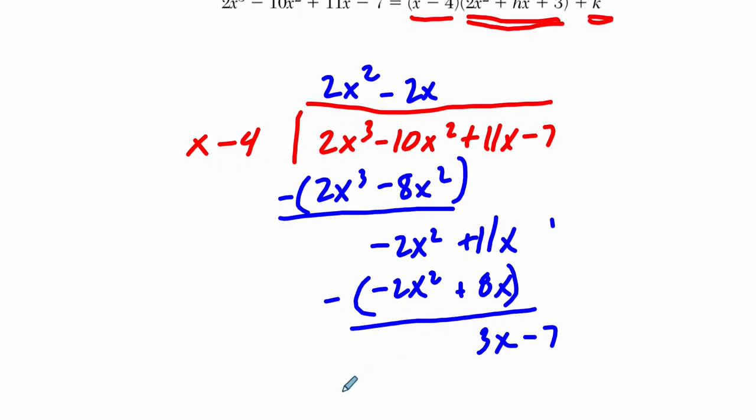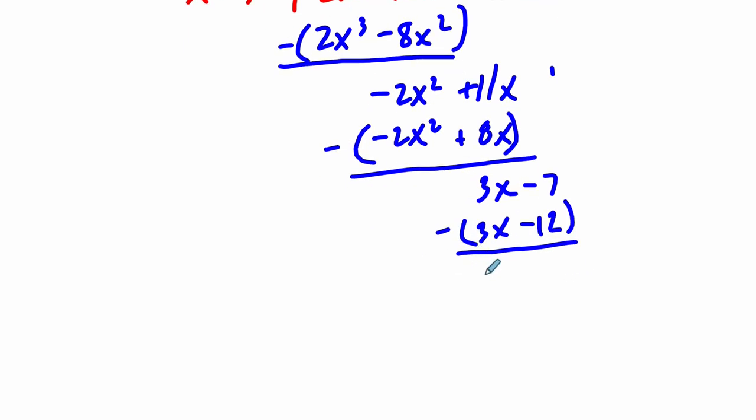How many times does x go into 3x? To answer that question, I always take this term and I divide it by this one. 3x divided by x will be the answer of that question, and that is just 3 plus 3. So we have 3 times x minus 4, we get 3x minus 12, and we're subtracting these things, so we get 3x minus 3x is nothing, negative 7 minus negative 12 is 5. That's our remainder.